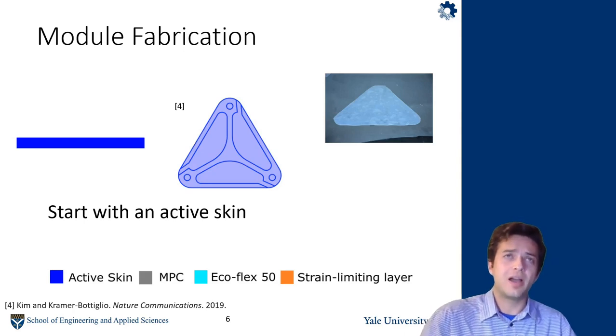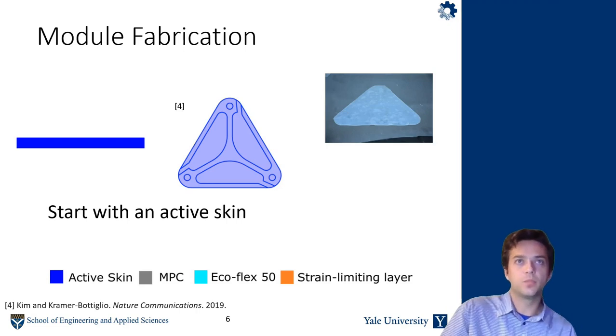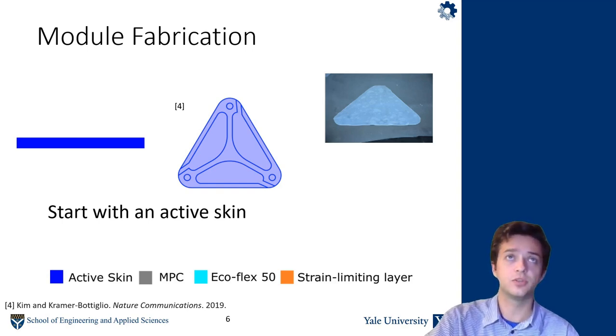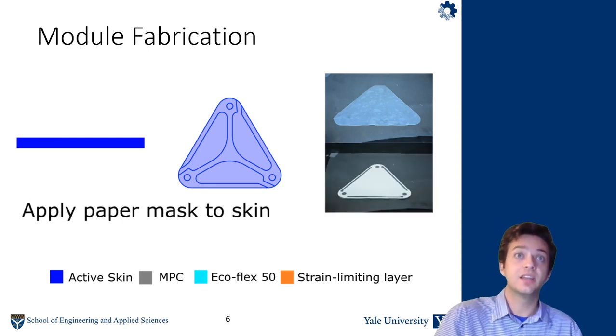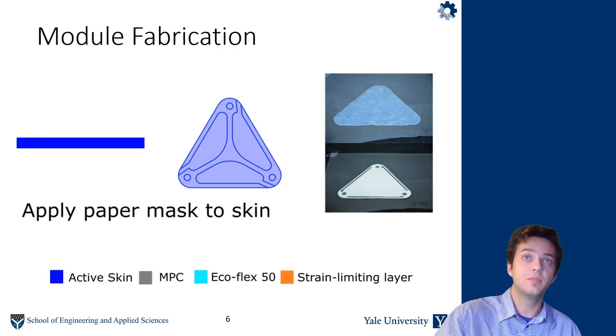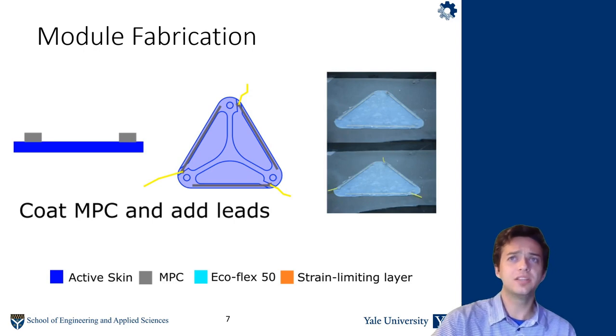So let me tell you a little bit about how we fabricate our modules. We start with an active skin, which is a skin with embedded actuators. You see three actuators in this triangle, one for each side, and then pneumatic actuators so they can inflate. And you can look at previous work from my lab to see how those were made. But we apply a paper mask to this skin that's a negative for where we want our sensors to be. And then we coat MPC. So we coat a layer and add some wire leads before the MPC cures, which takes about two hours.